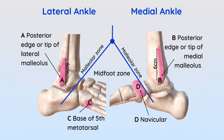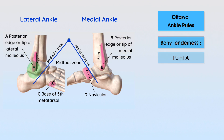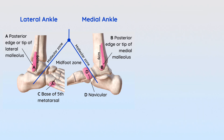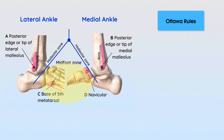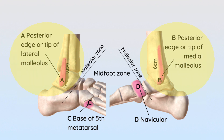The entry criterion for using the Ottawa rules is that the patient has had a trauma and reports pain in either the malleolus zone or the midfoot zone. If they report pain in the malleolus zone and have pain on palpation of point A or B, or are unable to take four weight-bearing steps immediately after injury and in the emergency department, they should have an ankle x-ray. If they report pain in the midfoot zone and have pain on palpation of point C or D, or are unable to take four weight-bearing steps, they should have a foot x-ray.